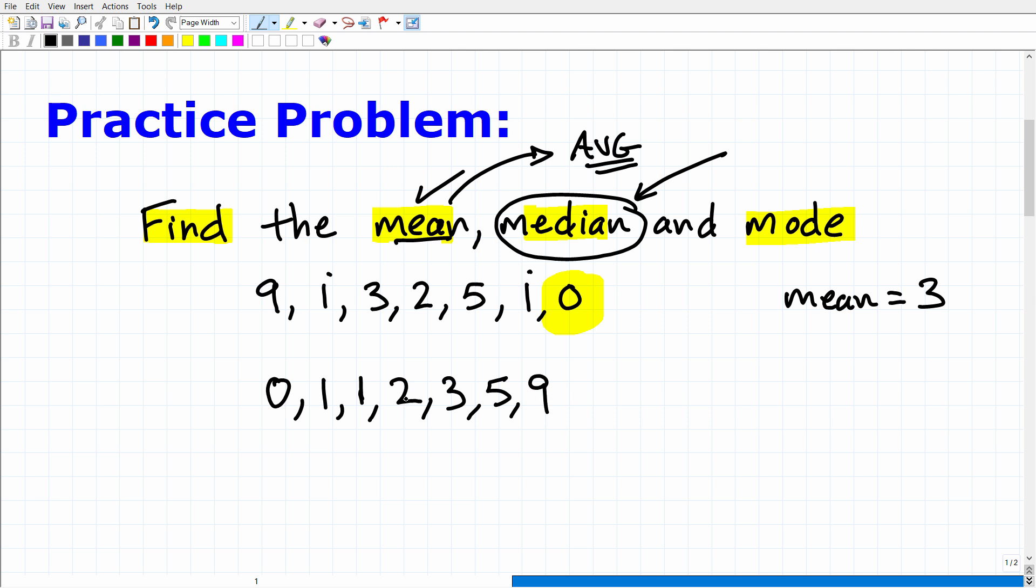Again, I'm going from lowest to highest. Then I have 5. And then lastly, I have 9. So I have 1, 2, 3, 4, 5, 6, 7. All right. So what is the middle number here? Well, if you look, we have 3 numbers here and 3 numbers there. So 2 is the middle number, because I have 3 numbers less than 2. I have 3 numbers greater than 2. So 2 is the median. The median here is 2.